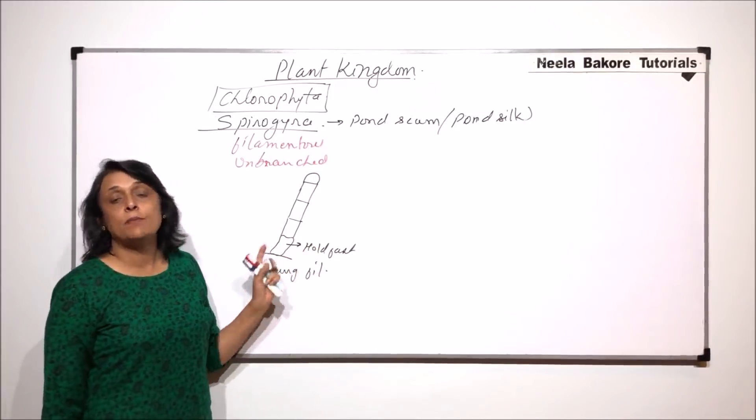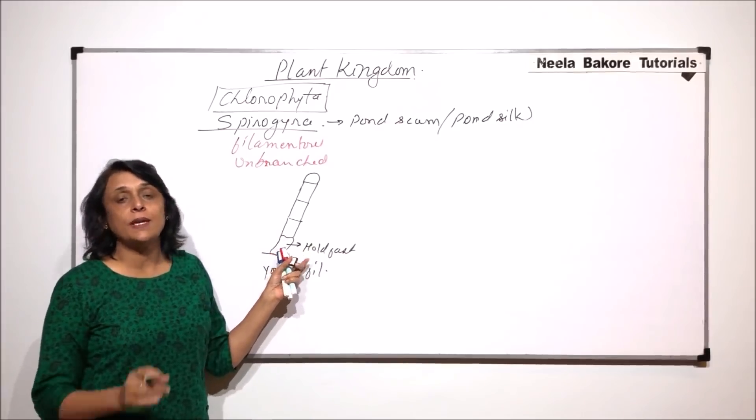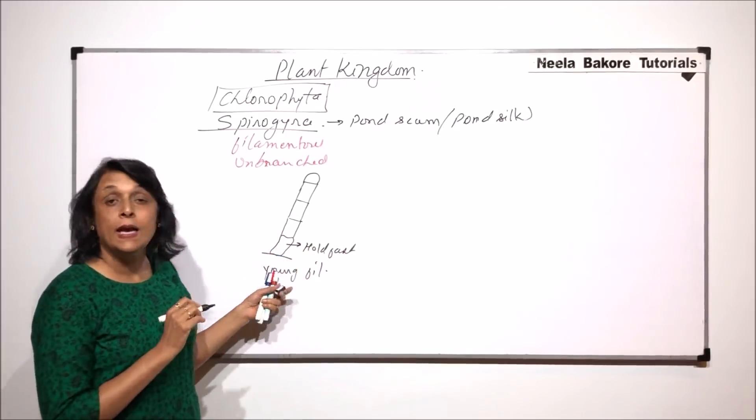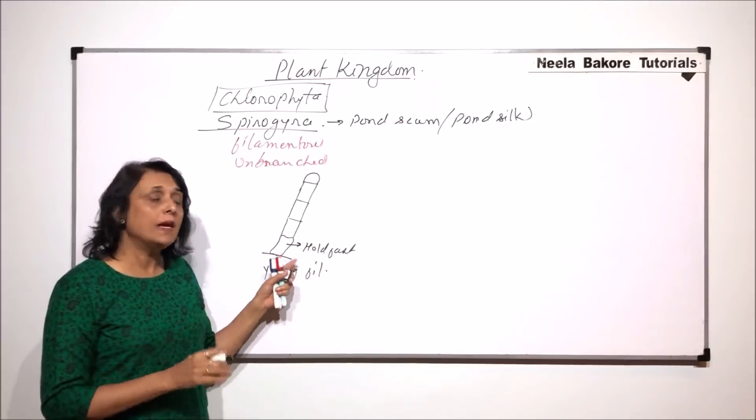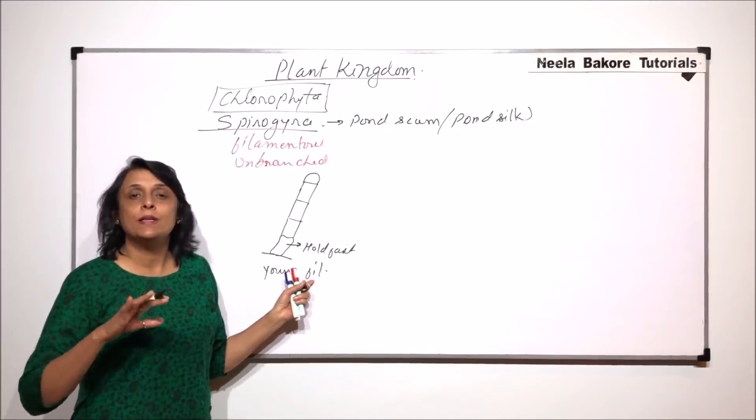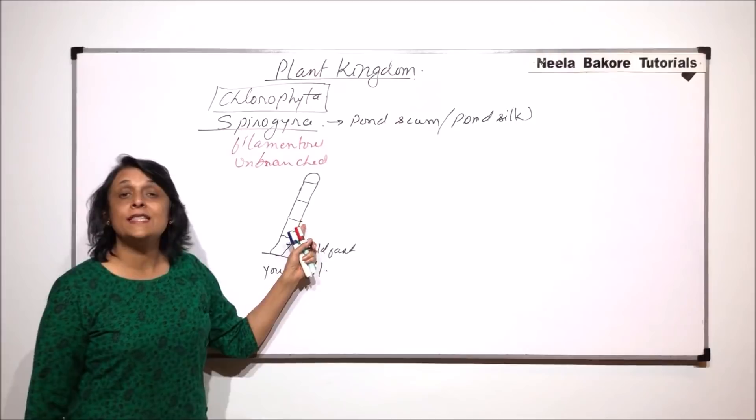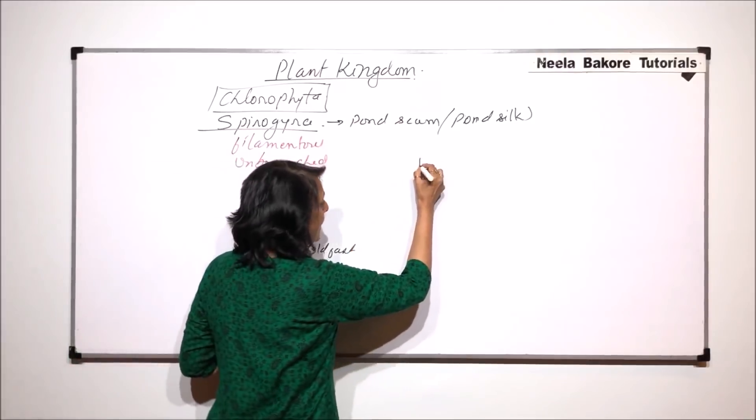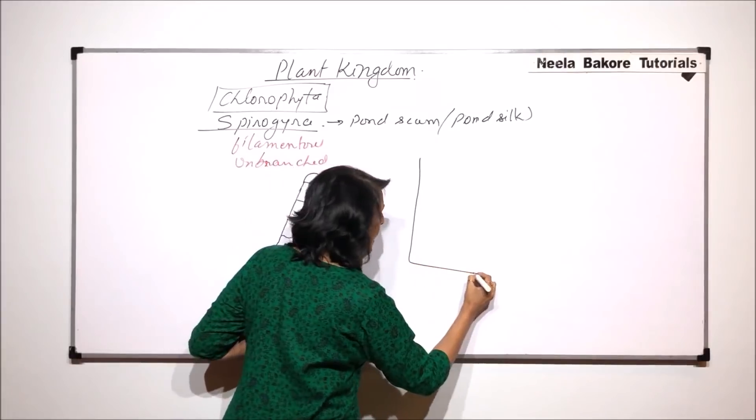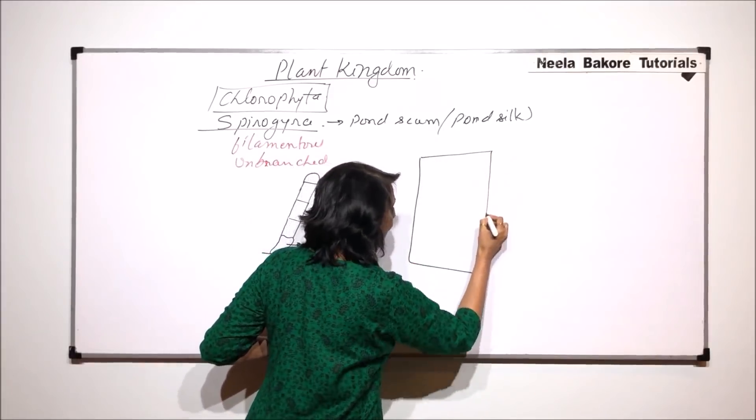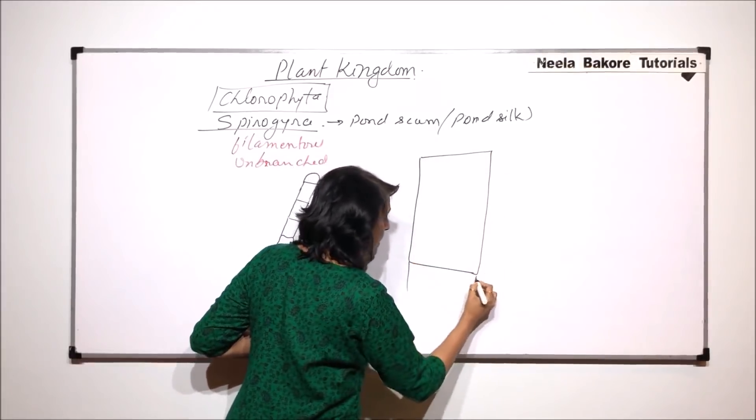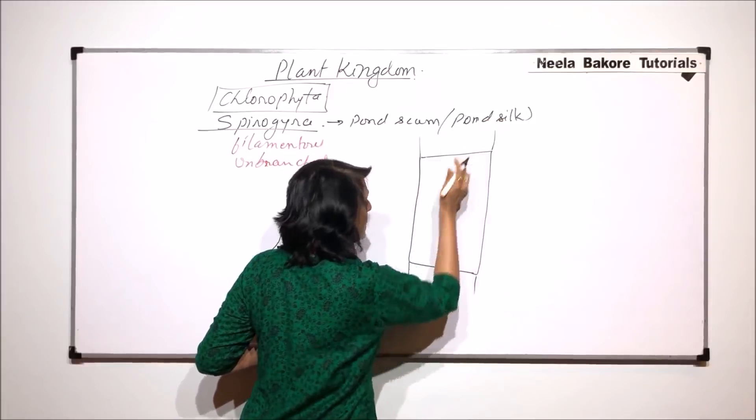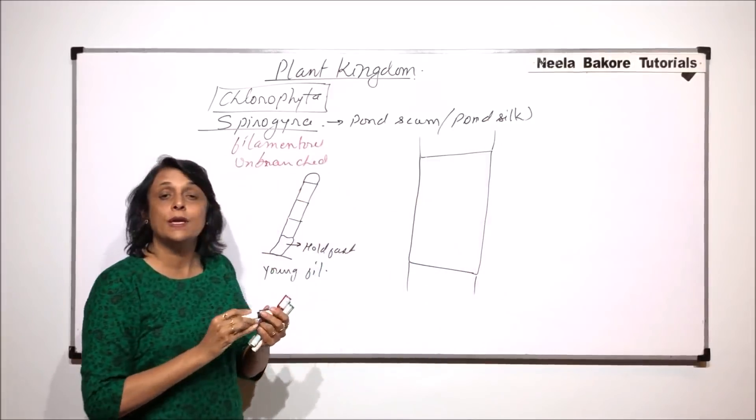Once it matures, it detaches from the substratum and becomes free-floating, carried by the water current. If we see the structure of a single cell, the length of the cell is more than its width. These are the cells and this is the one we will be drawing in detail.